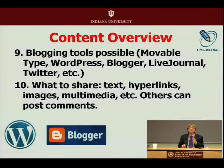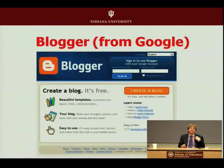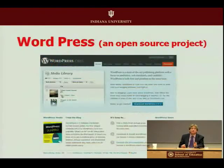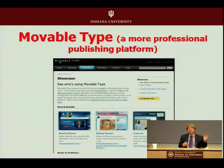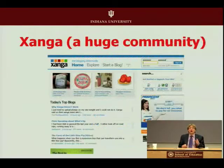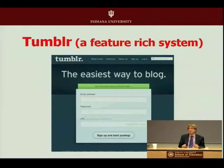Some of you might use tools like Blogger — that's the tool I use, it's from Google and it's free. Other tools include WordPress, which is open source. MovableType tends to be a little more on the professional side with varying degrees of cost. Zanga has a huge online community of users and is a very popular tool. Tumblr offers more features and a very rich media set.